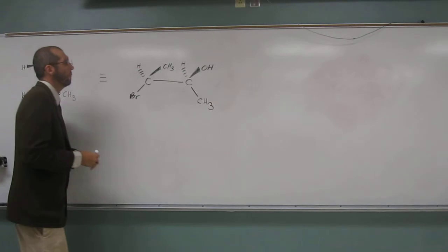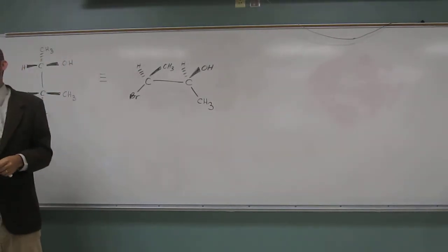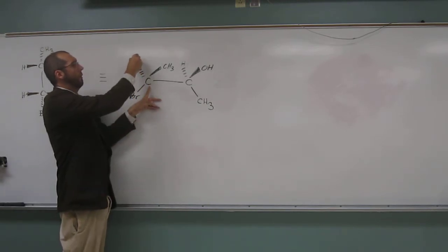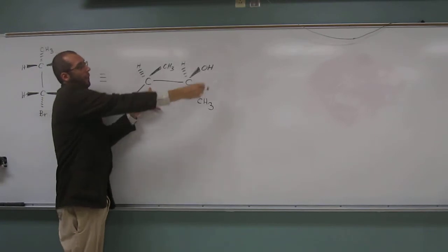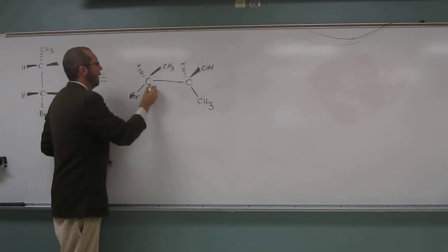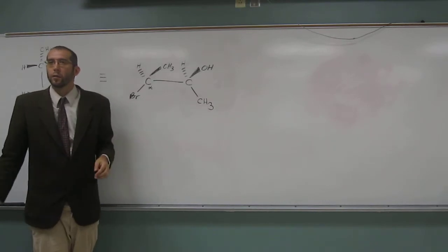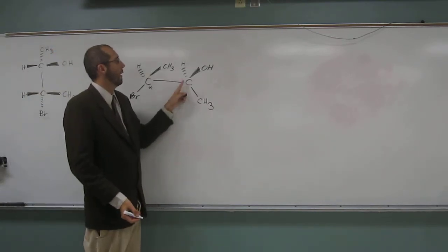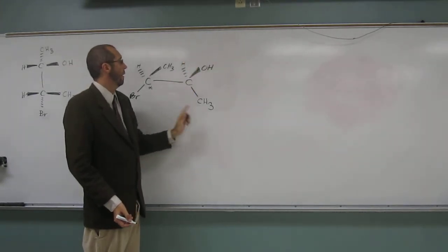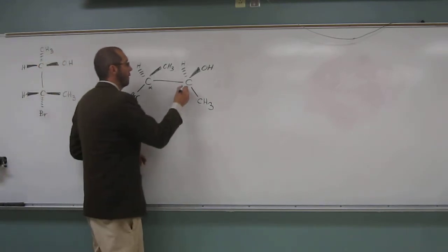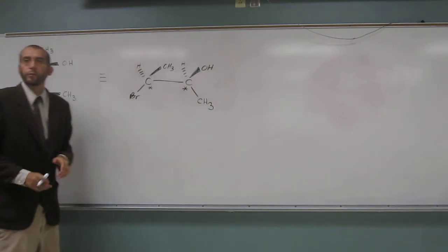So, remember, to have a stereocenter, we have to have four different groups on a particular atom. If we look at this carbon atom, hopefully you see we have a hydrogen, a methyl, a bromine, and then this group over here. Those are four different groups, so we're going to call that a stereocenter. Everybody okay with that one? Yeah. Same thing over here, this carbon atom has a hydrogen, a hydroxyl, a methyl, and this group over here. So that's four different groups, another stereocenter.